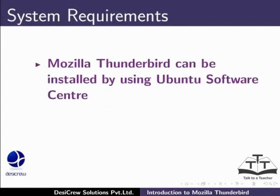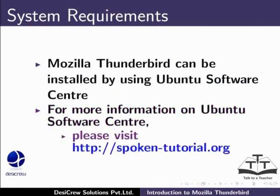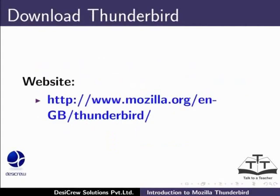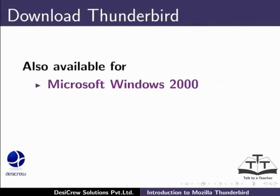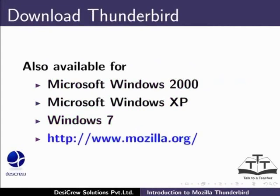If you do not have Mozilla Thunderbird installed on your computer, you can install it by using Ubuntu Software Center. For more information on Ubuntu Software Center, please visit this website. You can also download and install Thunderbird from the Mozilla website. Mozilla Thunderbird is also available for Microsoft Windows 2000 or later versions such as MS Windows XP or MS Windows 7. For more information about this, please visit the Mozilla website.